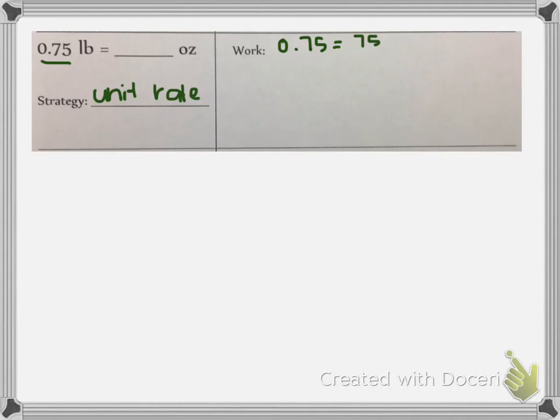75 hundredths can be written as 75 over 100, and if we put it in simplest form, that is 3 fourths. So this is 3 fourths of a pound and we want to convert this to ounces. I'm going to multiply by my unit rate, and my unit rate will tell me how many ounces are in one pound. There are 16 ounces in every one pound. So I'm going to be multiplying these two fractions.